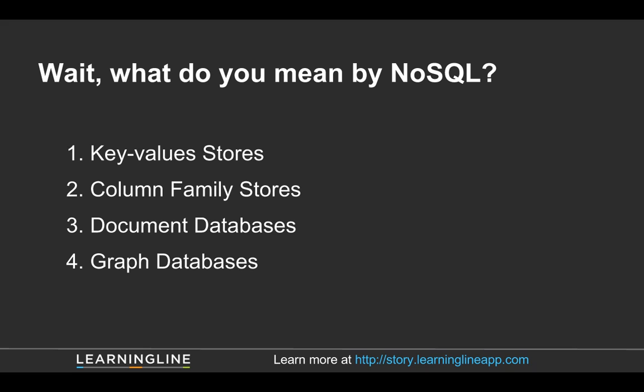First, we need to talk about what it means when someone says choosing NoSQL or using a NoSQL database. There are actually four different categories or families of NoSQL databases that all fall under the NoSQL banner, but they optimize different things and have different advantages and weaknesses. We've got key-value stores, which are kind of like durable dictionaries.